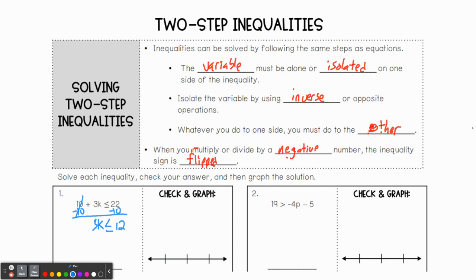And the last step, remember, I still want k by itself, but I have three of them. So how do I get rid of three of them? I just divide by three. So then what we end up with is k is less than or equal to 4. Let's put 4 down there. And because it's less than or equal to, close circle. And we're going to the left.